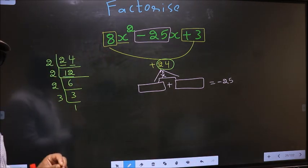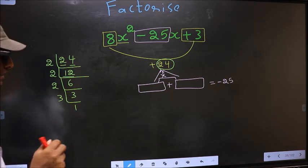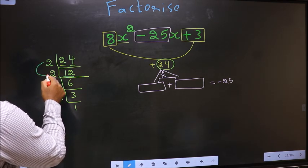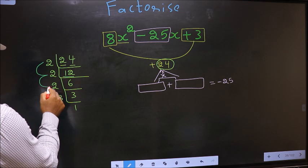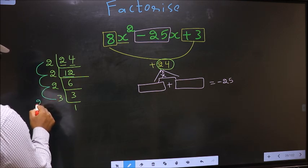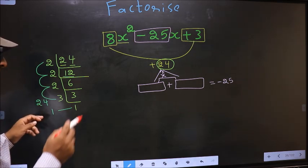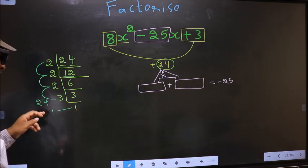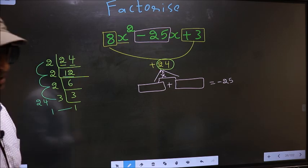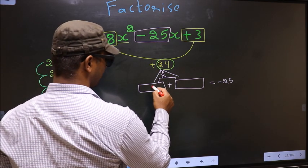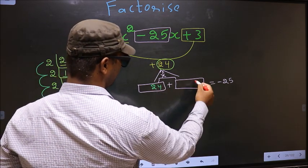Now the 2 numbers should be 2 into 2, 4 into 2, 8 into 3, 24. And the second number is 1. 24 plus 1 is 25, 24 into 1 is 24. So here we write 24 and 1 here.